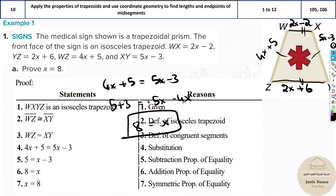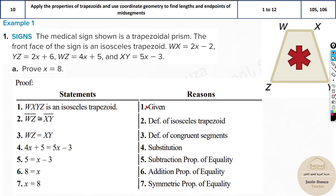They want it in terms of paragraph statements. You state this is an isosceles trapezoid as given, then by definition the legs are equal. You equate them, use the subtraction property — subtracting 4x on both sides — then the addition property adding 3, and you get x equals 8. Since this is MCQ, just the answer will be asked.